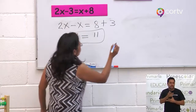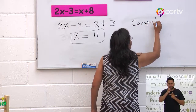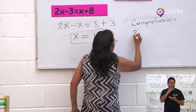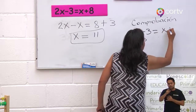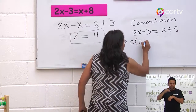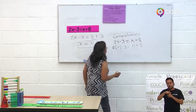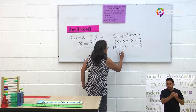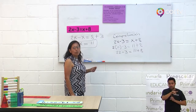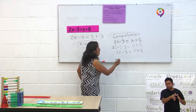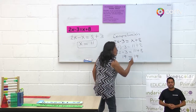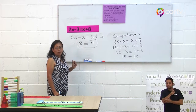Ahora vamos a hacer la comprobación. Siempre es necesario hacer la comprobación para verificar si nuestro valor es correcto. Tenemos 2X menos 3 igual a X más 8. En lugar de X ponemos 11: 2 por 11 menos 3 igual a 11 más 8. 2 por 11 es 22; 22 menos 3 es 19. 11 más 8 es 19. 19 igual a 19. Ya tenemos nuestra igualdad, el valor de X es correcto.